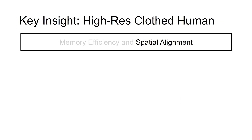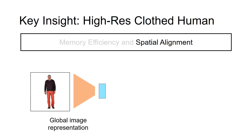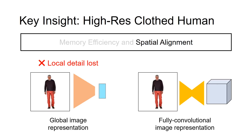Spatial alignment is important in order to capture local details such as wrinkles on the clothing and hair present in the image. While many 3D reconstruction approaches use a global image representation, such representation loses the alignment of the features to the local information. We develop a 3D representation that functions well with a pixel-aligned, fully-convolutional image representation, which allows us to preserve local details.